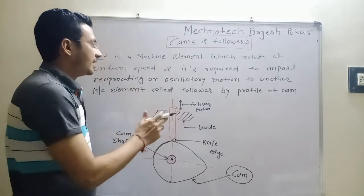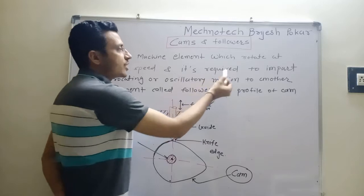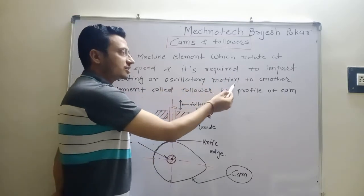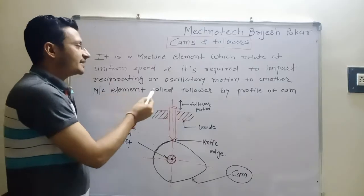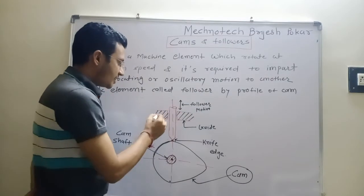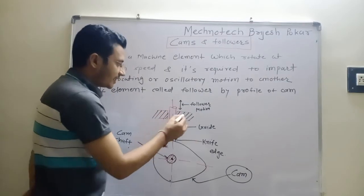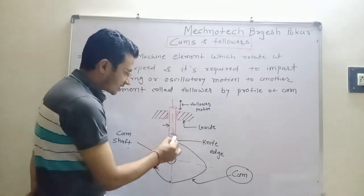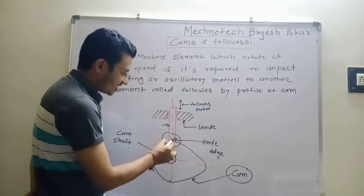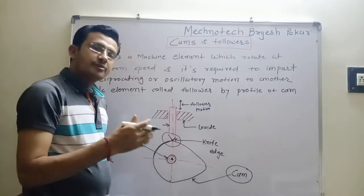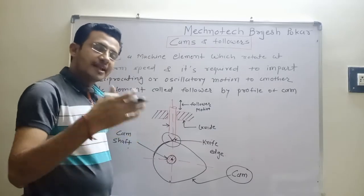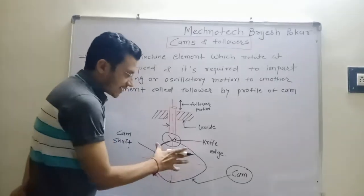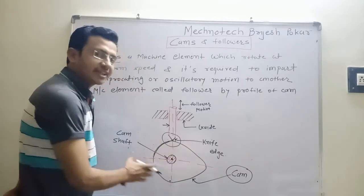The element that receives the reciprocating or oscillating motion is called the follower. This portion is called the follower. A particular type is called the knife-edge follower. We will see the types of followers in the next part. This is a cam — it has a particular shape.